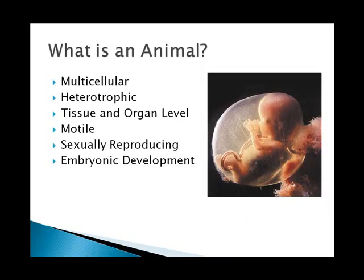Animals all must be heterotrophic, eukaryotic, and multicellular and lack cell walls. Ninety-five percent of all animals in the world are invertebrates — they do not have a backbone. However, most of the ones that we think about as animals are vertebrates, but only five percent of the species on the planet in the animal kingdom are vertebrates themselves.